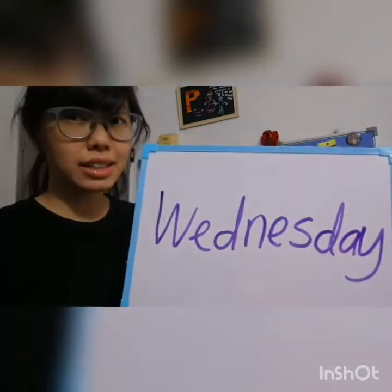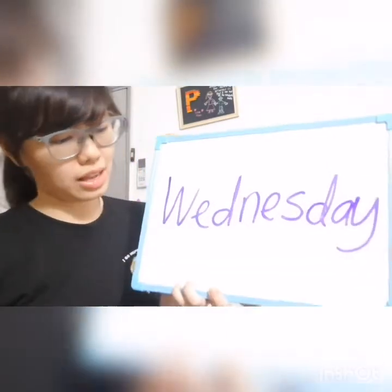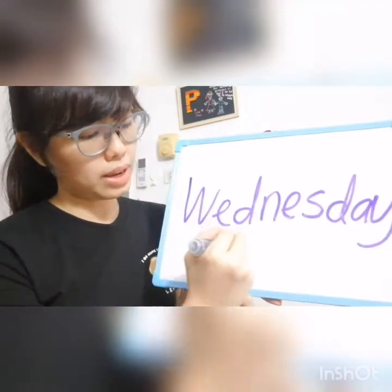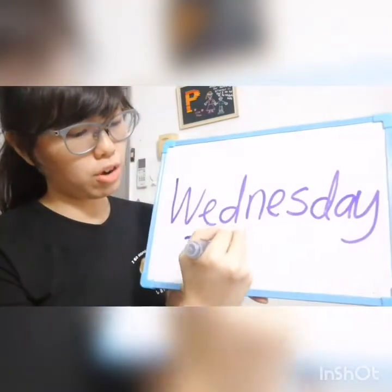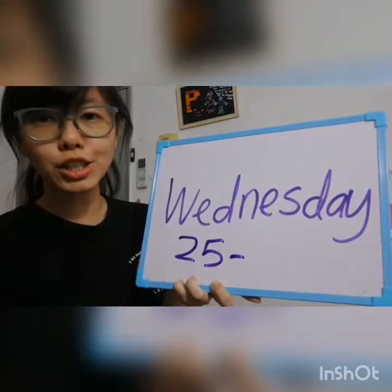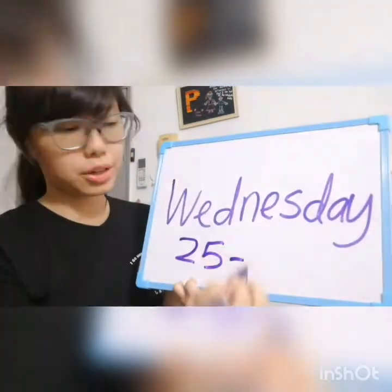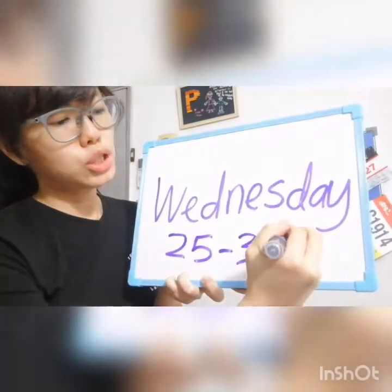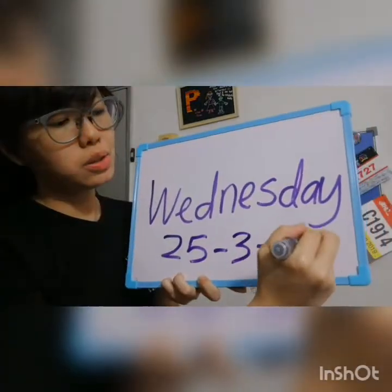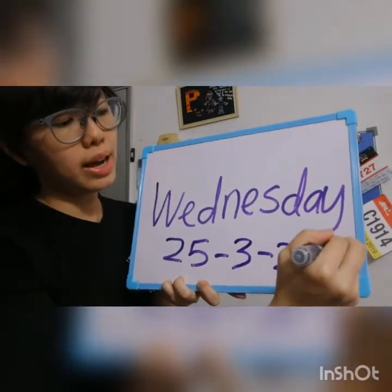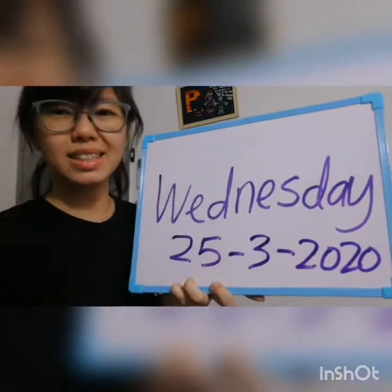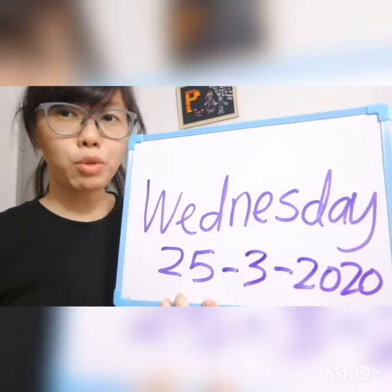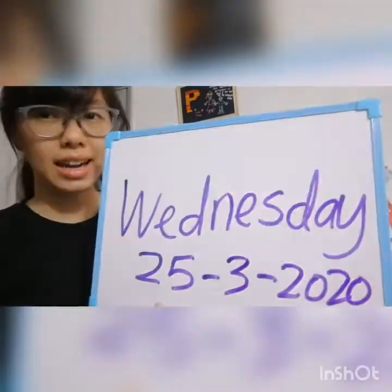And the date today is 25th of March — that's the 3rd month — 2020. Write this on top of your page now.